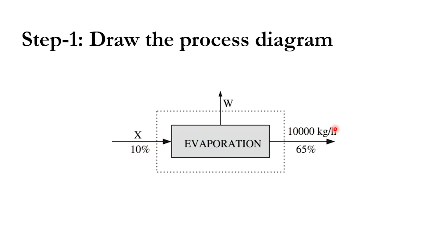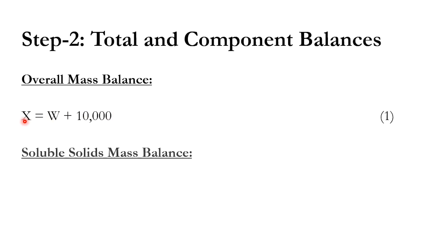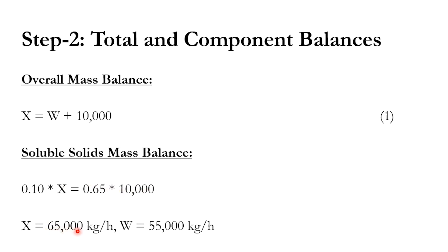We know the flow rate of the product, so this is a reverse process. The overall balance is: x = w + 10,000, where 10,000 kg/hr is the final product, w is the water evaporated, and x is the feed. For the soluble solids mass balance: 0.1 × x = 0.65 × 10,000. Water does not contain any soluble solids.